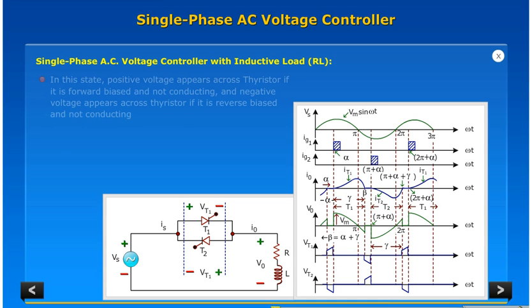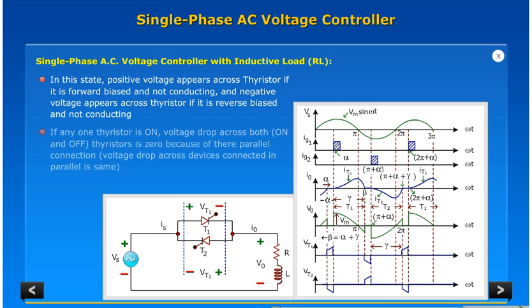In this state, positive voltage appears across thyristor if it is forward biased and not conducting, and negative voltage appears across thyristor if it is reverse biased and not conducting. If any one thyristor is on, voltage drop across both on and off thyristors is zero because of this parallel connection.